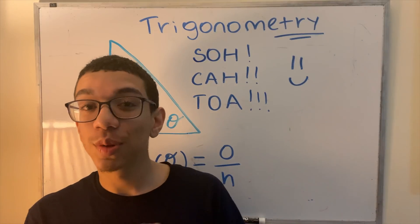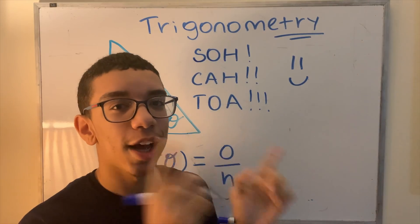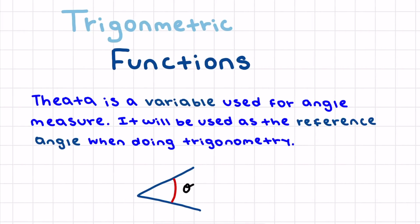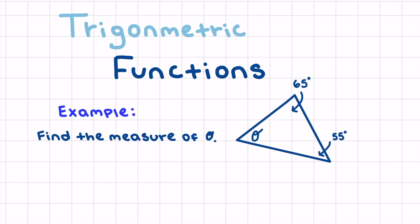The first thing we're going to talk about is this symbol right here — theta. Theta is a variable used for angle measure and will be used as the reference angle when doing trigonometry. Basically, theta is any given angle — so if you say theta is 50 degrees, then theta is 50 degrees.